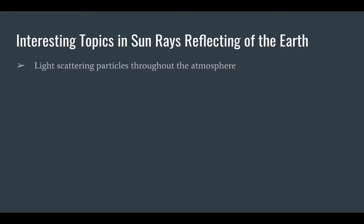We have light scattering particles throughout the atmosphere. Throughout earth's atmosphere, there are many particles that scatter the light coming from the sun. These particles are tiny water droplets and dust particles. They make the sky look different colors based off of the wavelength of the light being scattered. For example, short wavelengths make the sky appear blue, which it normally does, and longer wavelengths make it appear yellowish almost, and even reddish when the sun is very low.